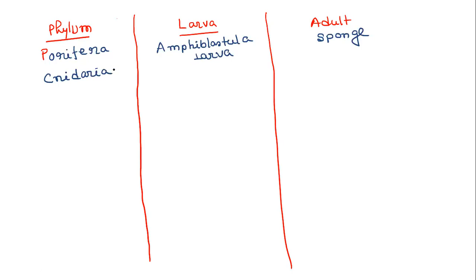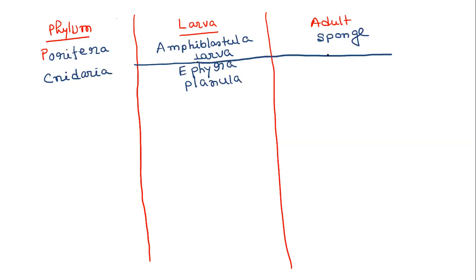Phylum cnidaria: larval stages are ephyra larva and planula larva. Ephyra larva becomes adult jellyfish.